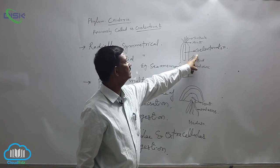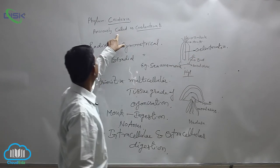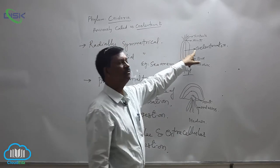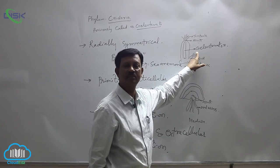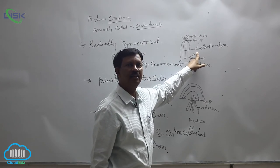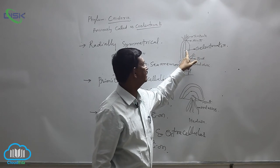The presence of inner cavity coelenteron is why this phylum is previously called as coelenterata. Coelenterata or coelenteron is also known as gastrovascular cavity. It performs two main functions: one is the circulatory system and also food is digested.